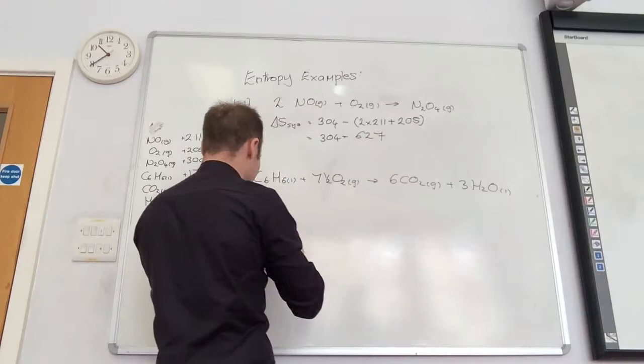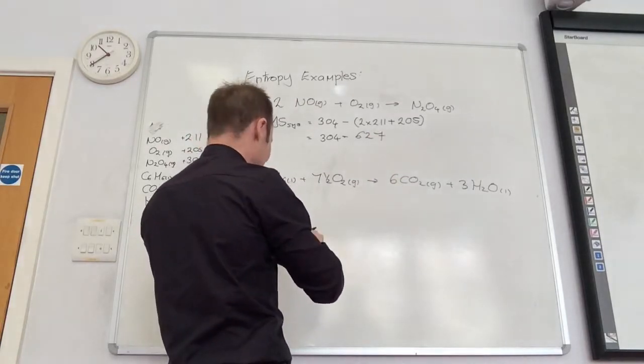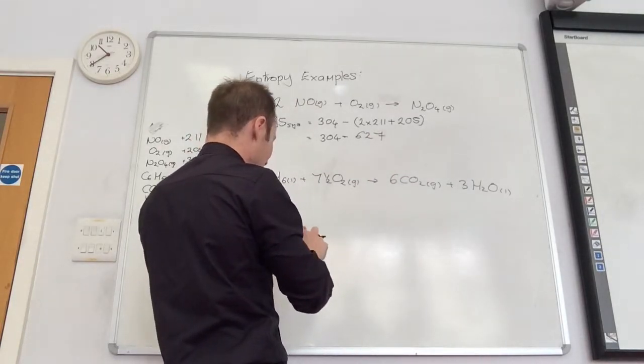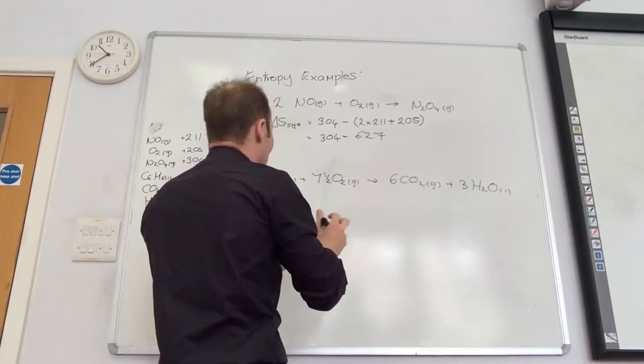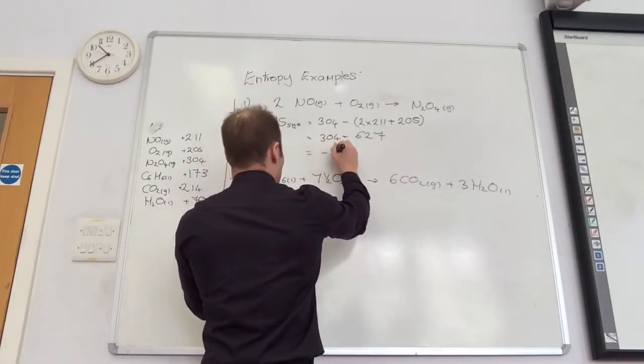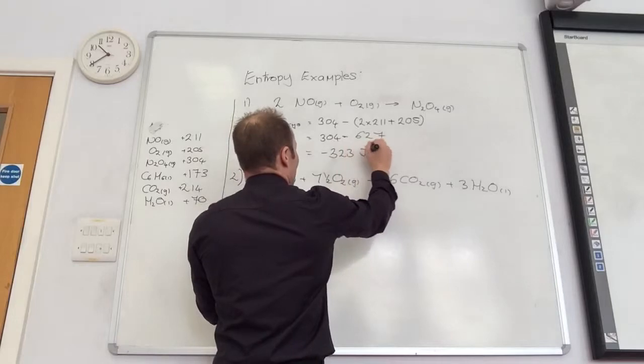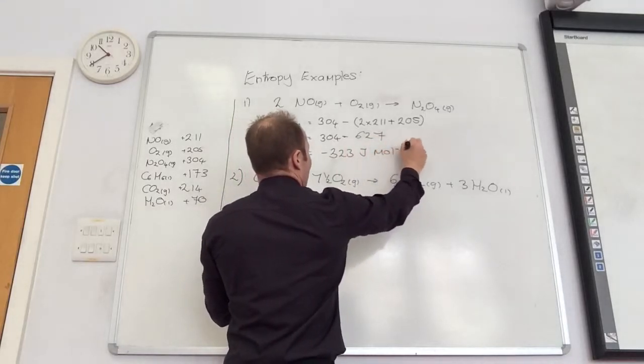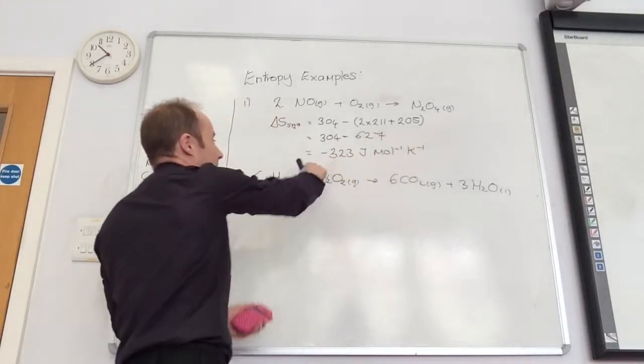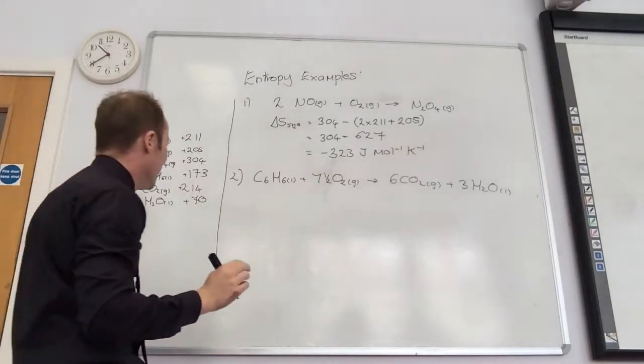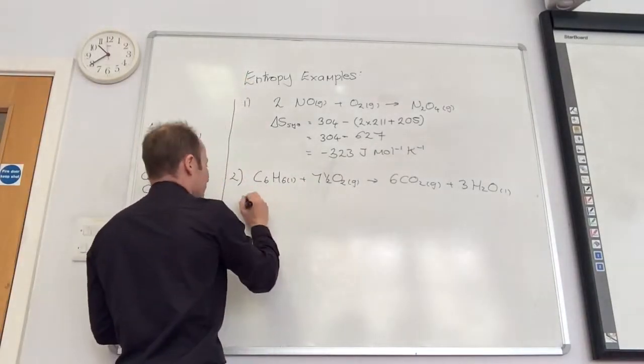Minus 627, fabulous. So it then becomes 304 minus 627, which gives me minus 323 joules per mole. As expected, a minus figure. That's a relief. Let's have a look at the next one.